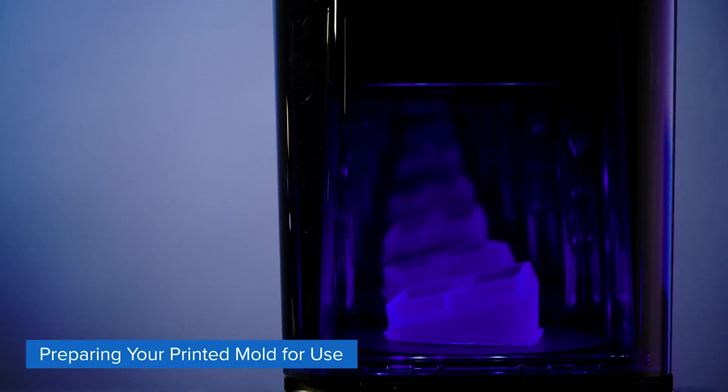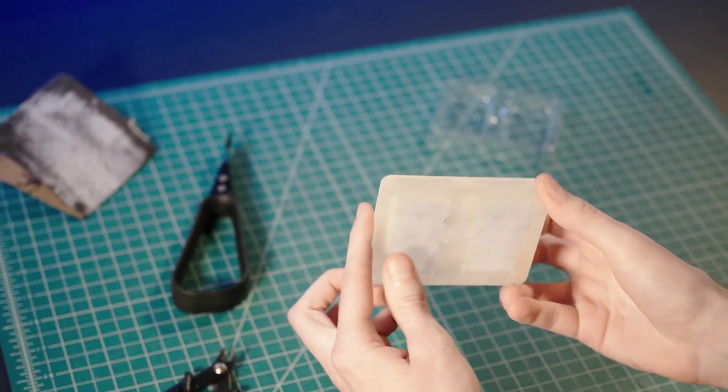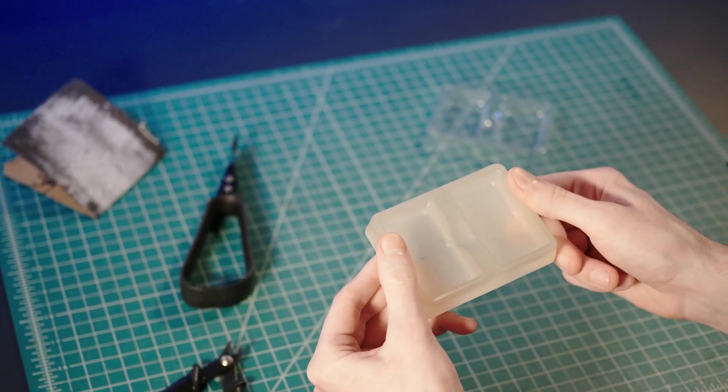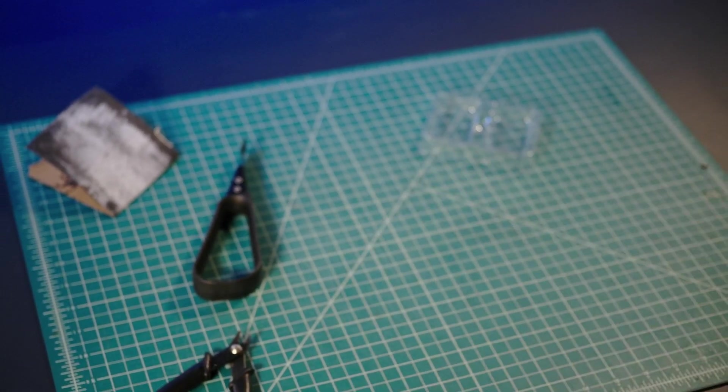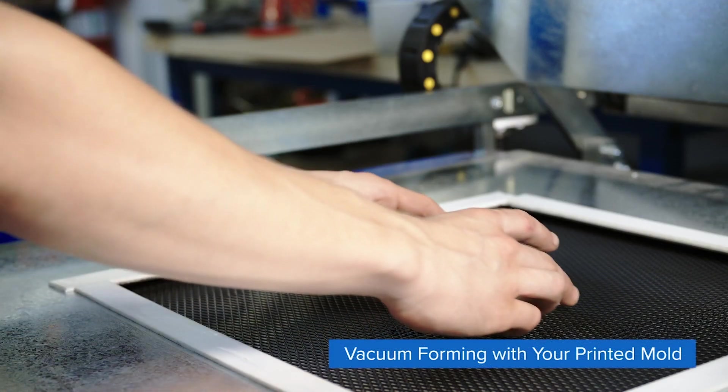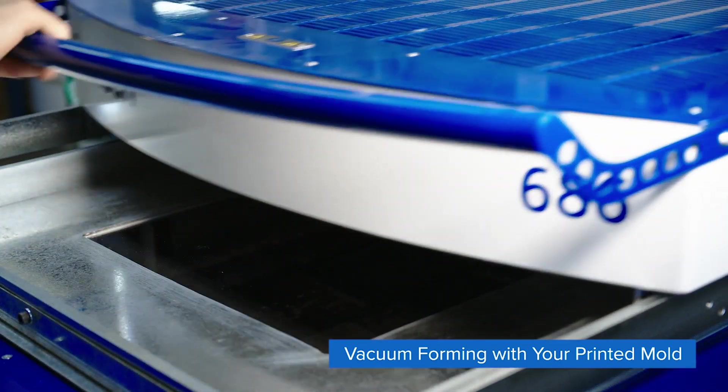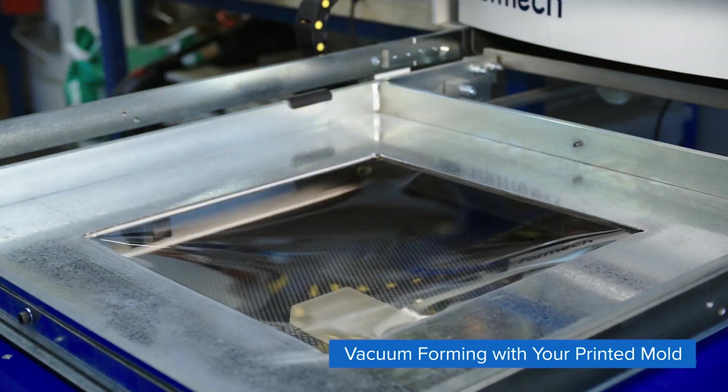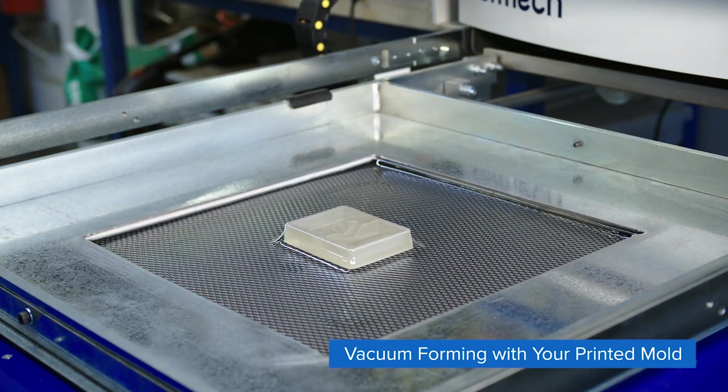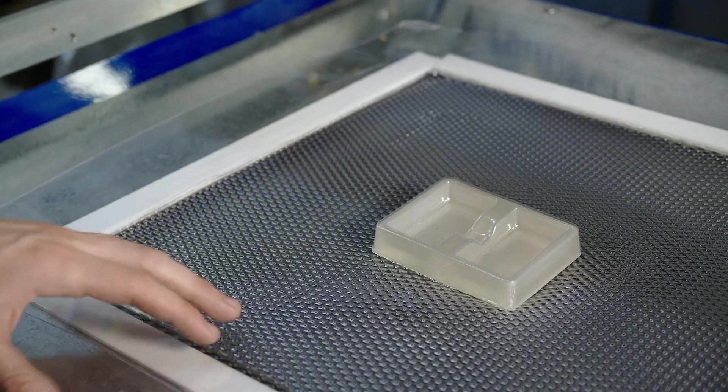When you're ready to vacuum form your parts, you can treat the printed parts the same way you would a traditionally fabricated tool. Simply load the tool into the vacuum forming machine work area, heat the plastic sheet until it softens, then draw it down onto the part and apply vacuum. Now that the plastic is cooled, we can remove our vacuum form part from the tool.